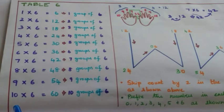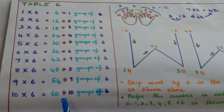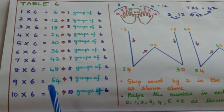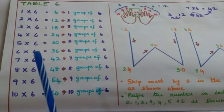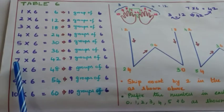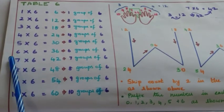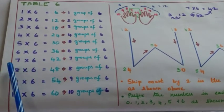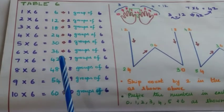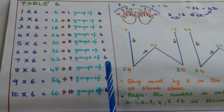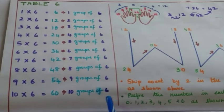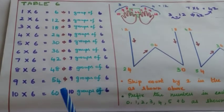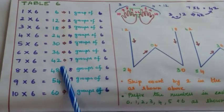It is important for the child to read the table properly. Once they are able to read it, you can help them understand what each row means, because they need to know the purpose of learning tables. For example, row 7 of table 6 means 7 groups with 6 items in each group. We perform multiplication 7 into 6 to obtain the result 42. So once you explain these concepts to the kids, move to the next step of introducing tricks for memorizing table 6.